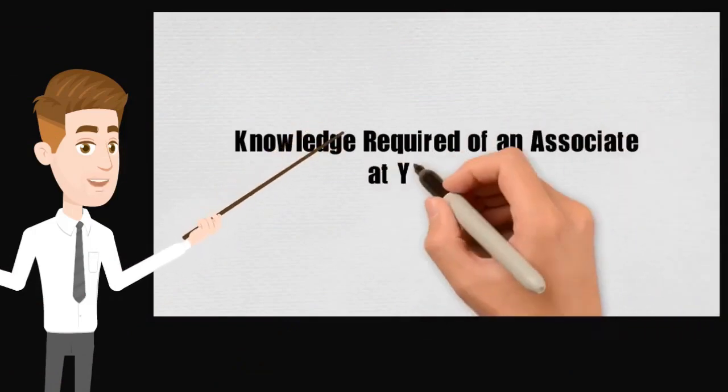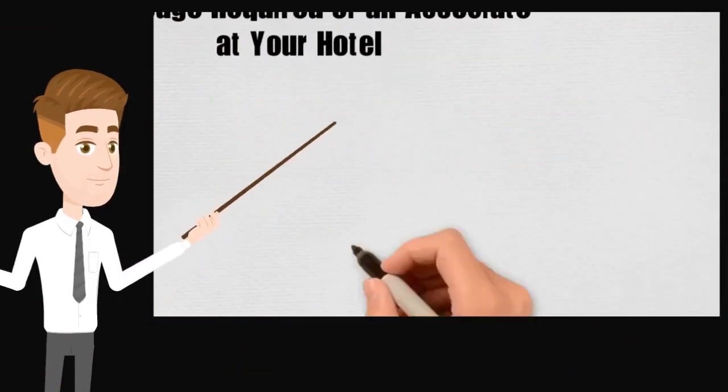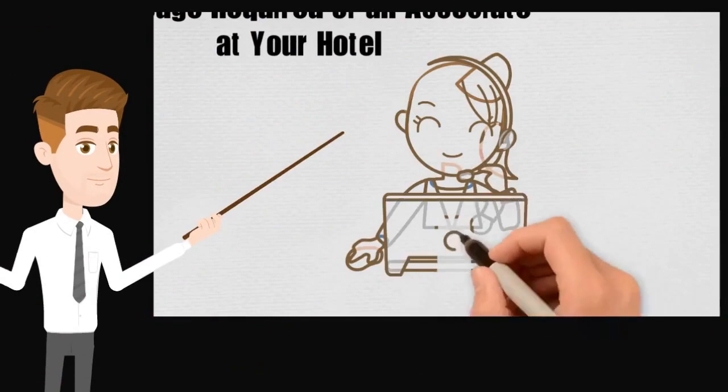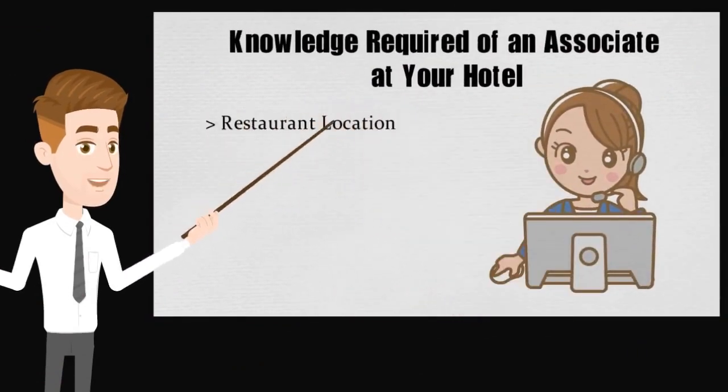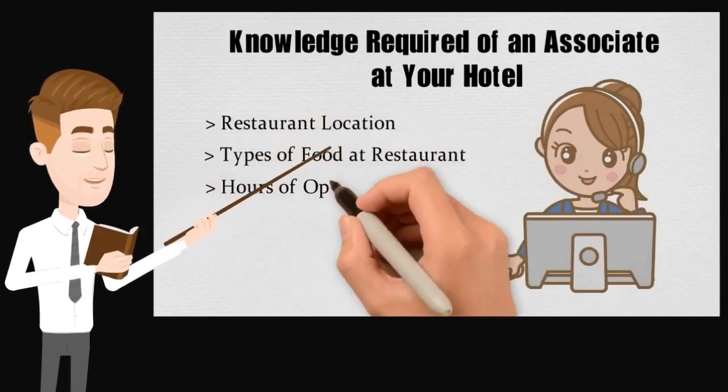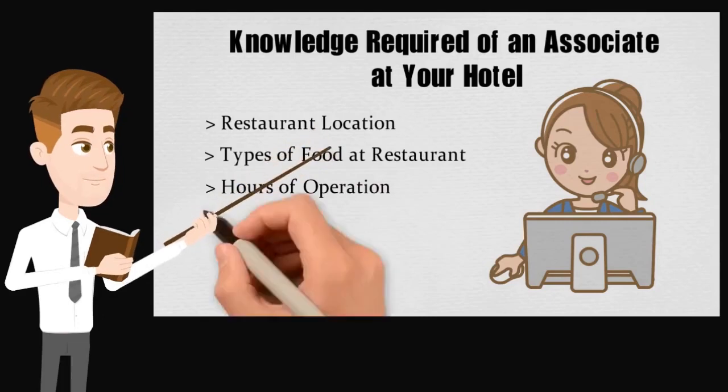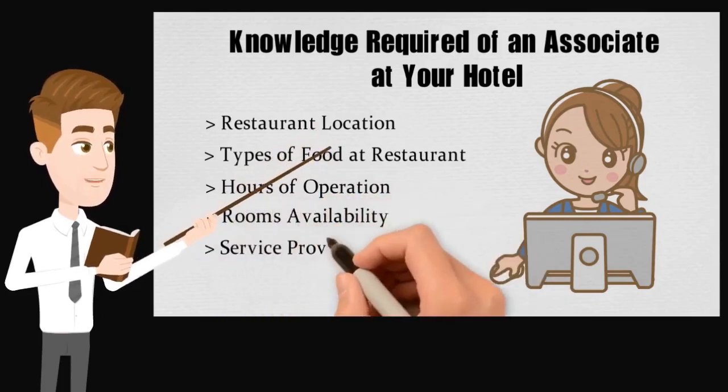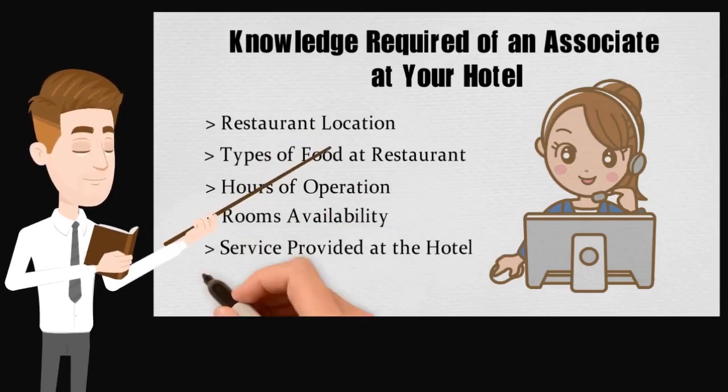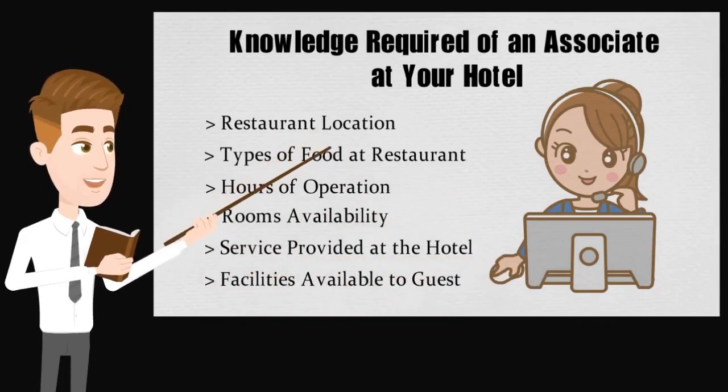Next will be knowledge required of an associate at your hotel. Important: restaurant locations, types of food at restaurants, hours of operations, rooms availability, services provided at the hotel, hotel and facilities available to guests.